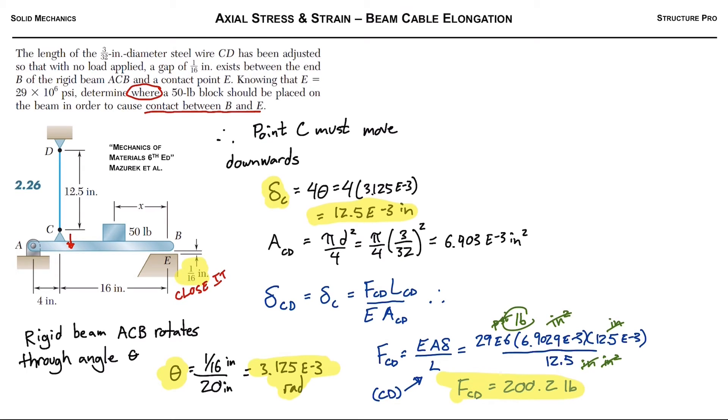We'll highlight that because we'll need that as we draw our, you guessed it, free body diagram. Normally we start with them, we're just getting to it now. So it's free body diagram of ACB, this rigid member. We'll draw it out, then draw all the forces on it. Here's our block, this 50 pound block. Draw the force, 50 pounds.